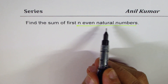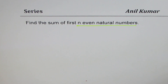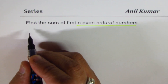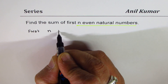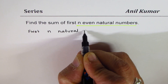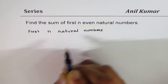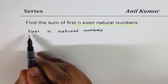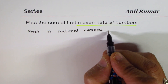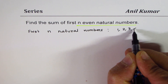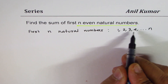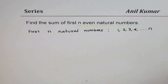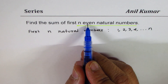When I say first n natural numbers, let's first figure that out. First n natural numbers — the numbers will be like 1, 2, 3, 4, till n. So these are my first n natural numbers.